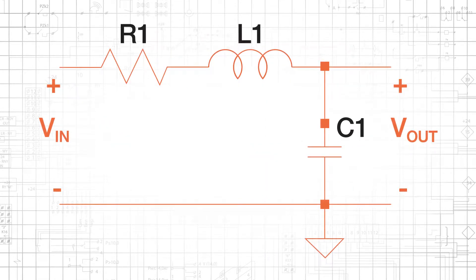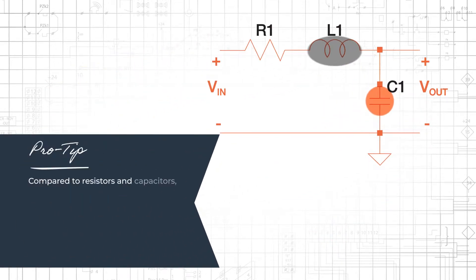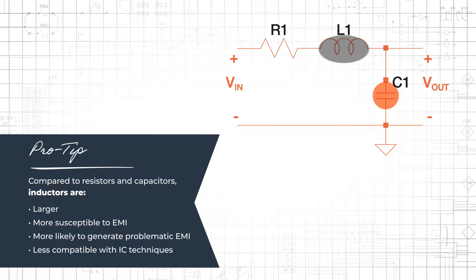Higher-order filters can be designed by taking advantage of the resonance that results from the interaction of capacitance and inductance. However, engineers often try to avoid the use of inductors. Relative to resistors and capacitors, they are larger, more susceptible to EMI, more likely to generate problematic EMI, and less compatible with integrated circuit techniques.